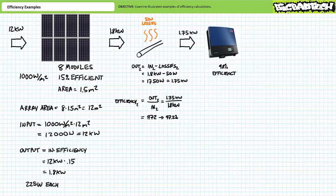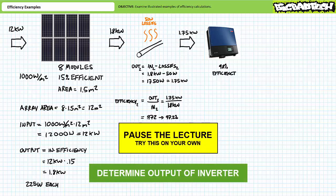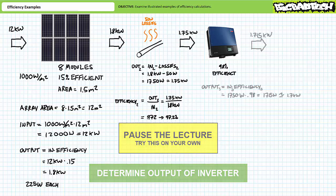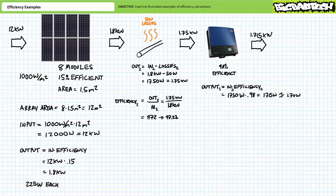Moving to the final stage: the inverter is known to be 98 percent efficient. Output is input times efficiency: 1.75 kilowatts times 0.98 demonstrates the inverter yields 1,715 watts or 1.715 kilowatts of usable power output.